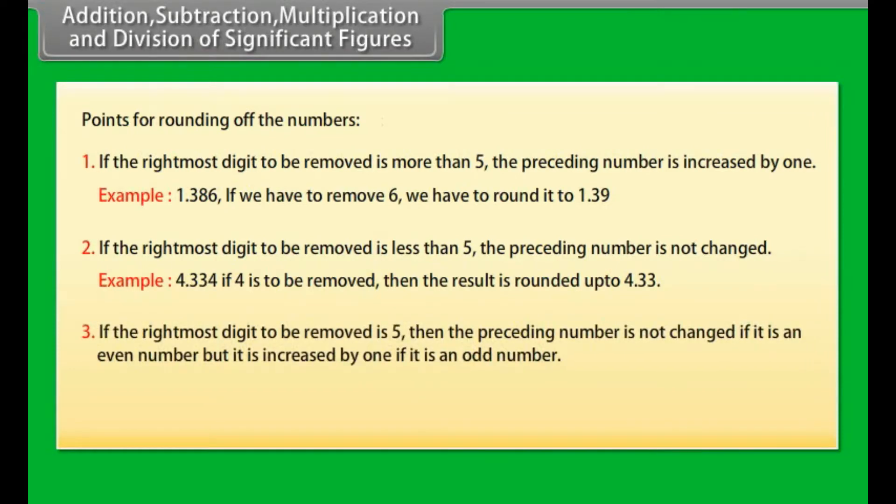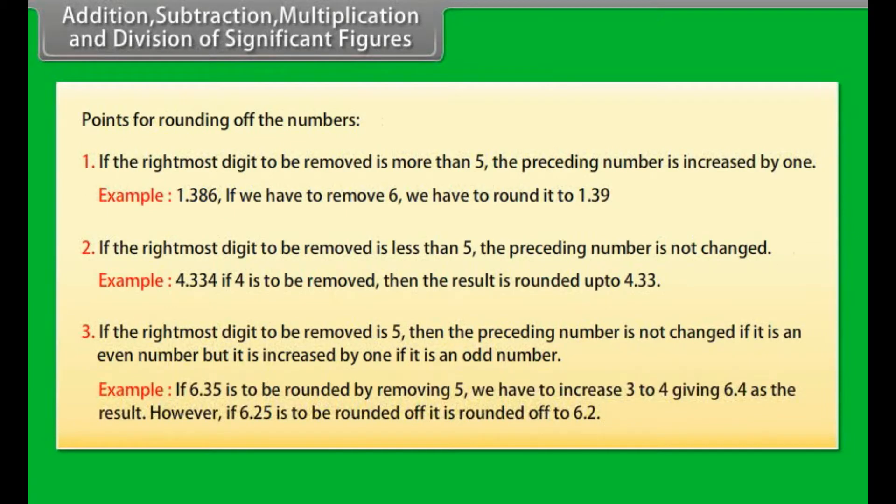(3) If the rightmost digit to be removed is 5, then the preceding number is not changed if it is an even number but it is increased by 1 if it is an odd number. Example: if 6.35 is to be rounded by removing 5, we have to increase 3 to 4 giving 6.4 as the result. However, if 6.25 is to be rounded off, it is rounded off to 6.2.